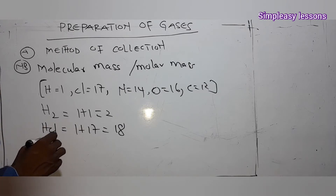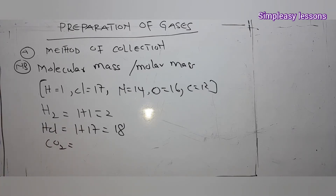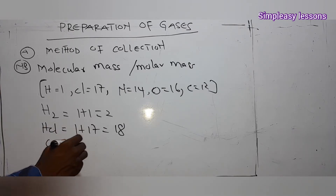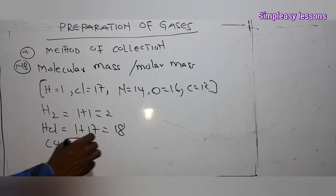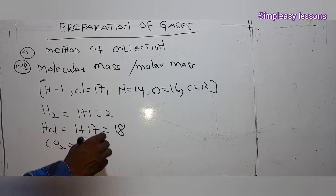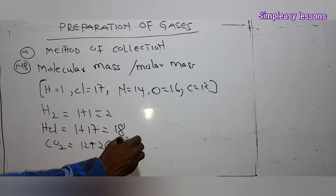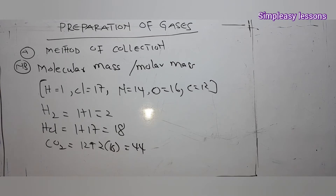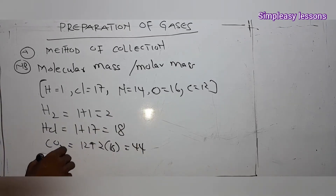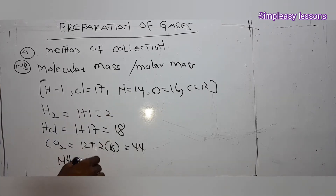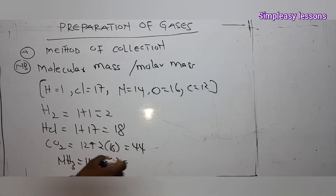If you have a compound like CO₂, carbon is 12 and there are two oxygens, so 2 × 16 = 32, plus 12 gives you 44. And if they ask you to find the molar mass of NH₃, nitrogen is 14 and we have three hydrogens.